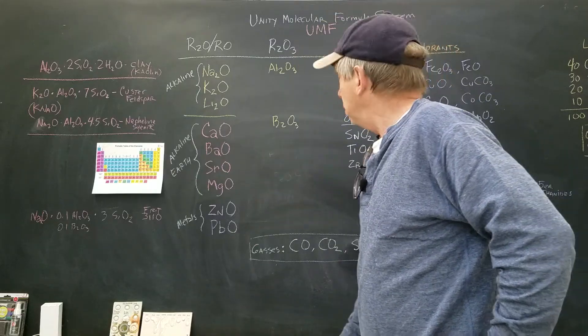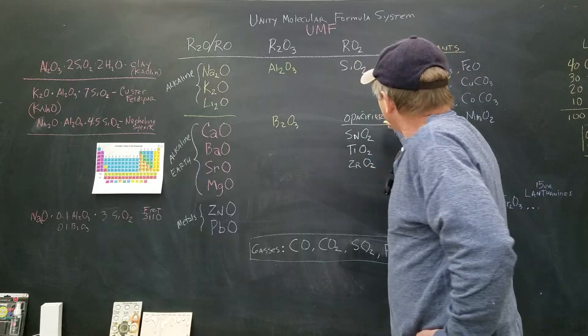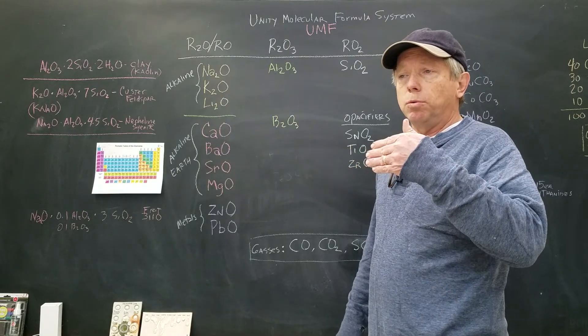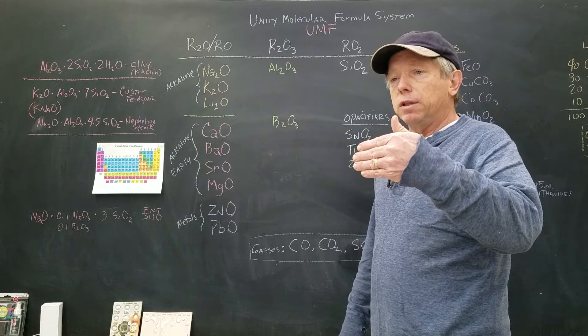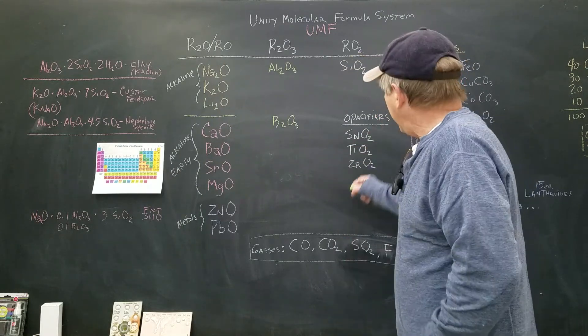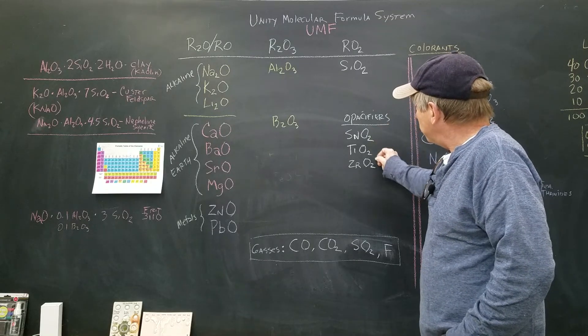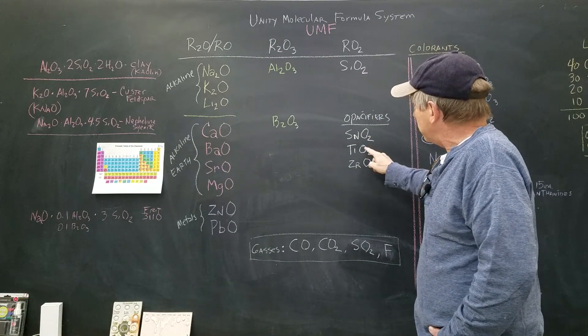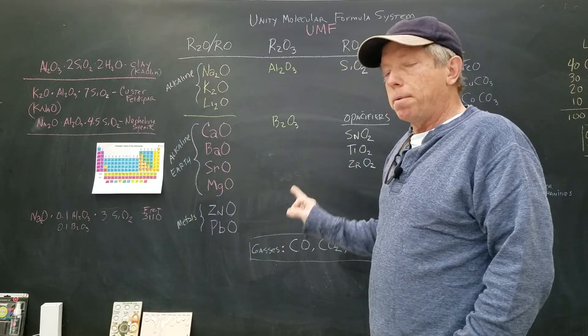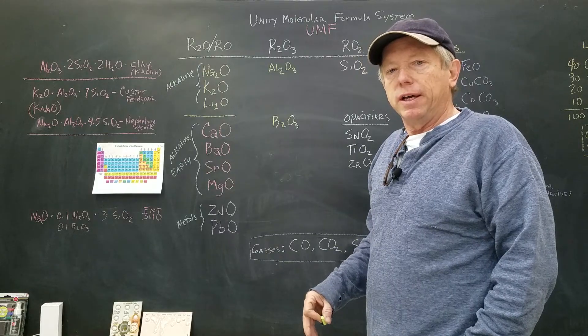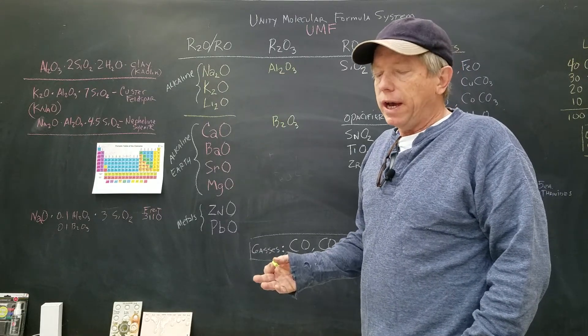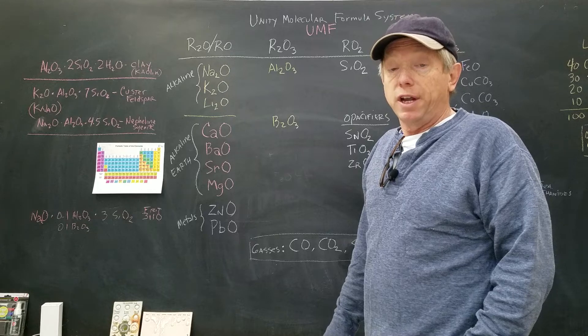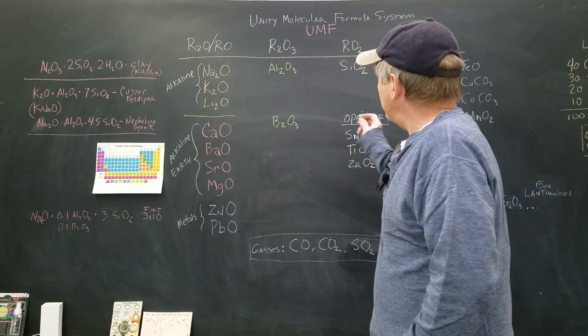The next thing we want to talk about is opacifier. That's how you make a glaze not be transparent. Most base glazes will be transparent generally. If we want them to be white or not see-through, we're going to add tin, titanium, or zirconium. I know that's under the glass former column, but they're not really glass formers, they just have this structure. One thing with this system is it's not perfect like all systems. It's just a way to model and help us predict things.